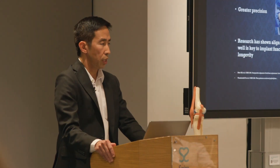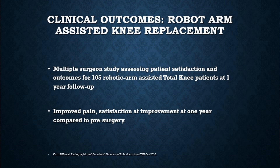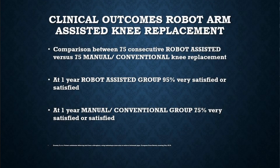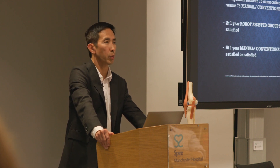Robot-assisted technology is much more precise and accurate than conventional surgery. Early studies have shown improved pain and improved satisfaction at one year compared to pre-surgery. One study comparing conventional versus robot-assisted knee replacement showed less pain, less requirement for pain medication, less blood loss, and reduced length of hospital stay, with better range of movement. Comparing both approaches, satisfaction levels are better: a group of 75 consecutive patients showed that at one year, 95% of patients in the robot-assisted group were very satisfied, versus 75% in the conventional group.